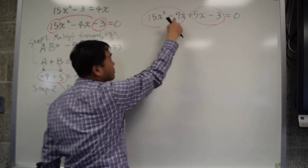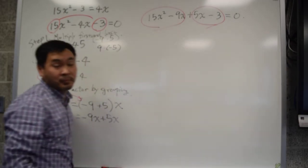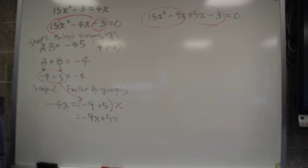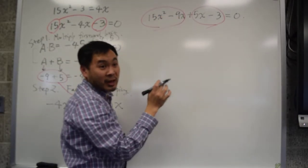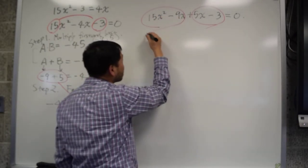So this one. What's the greatest common factor between 15 and 9? What? 3. 3. And then they also have x. Both they have x, right?